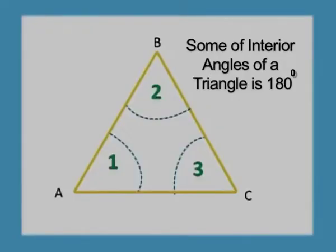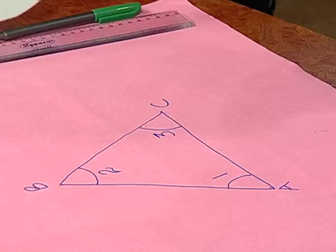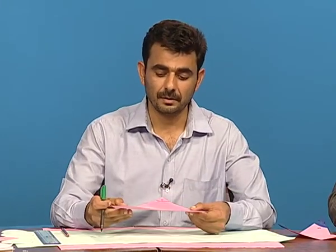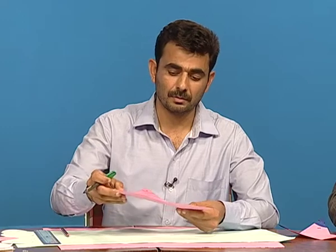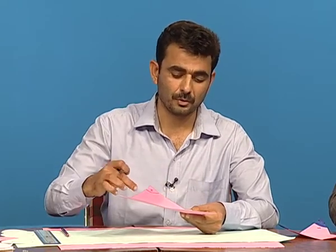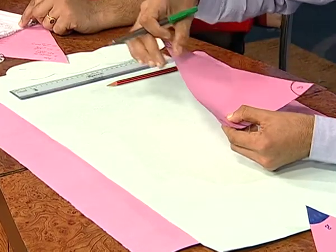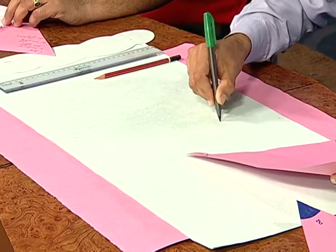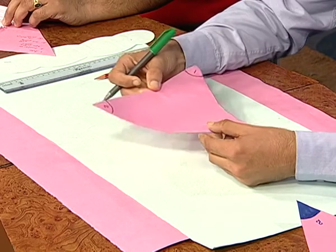We want to share this idea in Punjabi. We have taken a paper triangle and selected its corners to mark them. We will use these corners, fold them onto a single line, and paste them to see what happens.